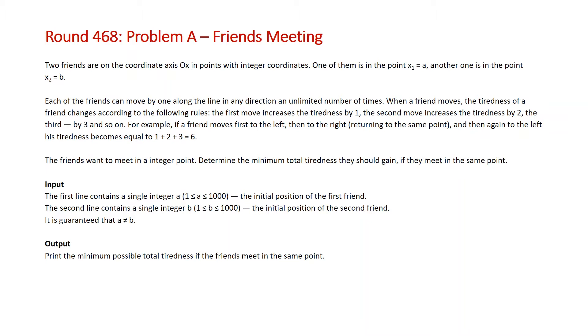Each of the friends can move by one along the line in any direction an unlimited number of times. When a friend moves, the tiredness of a friend changes according to the following rules. The first move increases the tiredness by one, the second move increases the tiredness by two, the third by three, and so on.